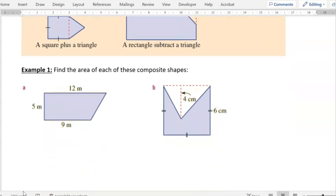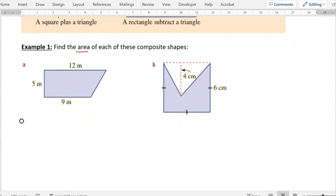So let's have a look at our examples. Find the area - the area is the inside-y bits, right? Find the area of each of these composite shapes. Now we've got some information here for this first one. And what I see here is, a straight line would be better.